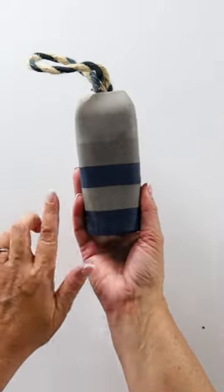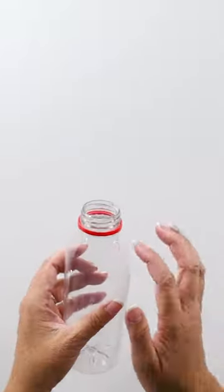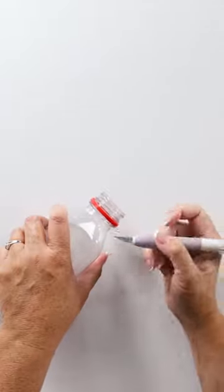Let's make a concrete buoy. I want to cut off this top plastic part of the bottle, so I'm going to do that with my craft knife.